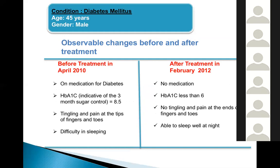A diabetes patient had their HbA1c reduced from 8.5 down to 6 while maintaining the same diet, following stem cell treatment.